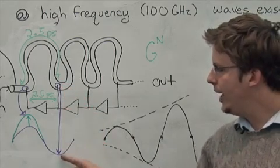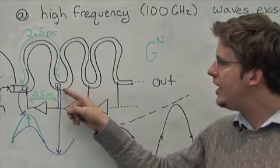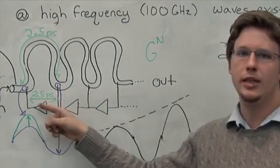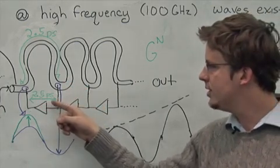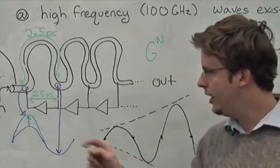We might detect a null in the wave at this point along the transmission line, and we can feed back at very high speed using fast silicon transistors, a signal that then amplifies the signal at the beginning of the transmission line.